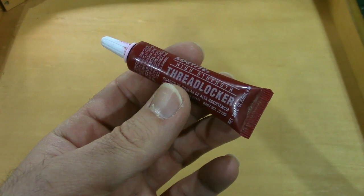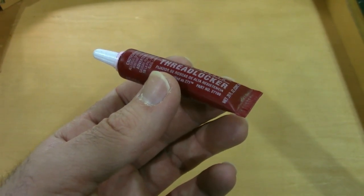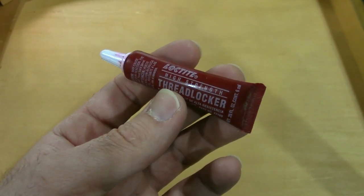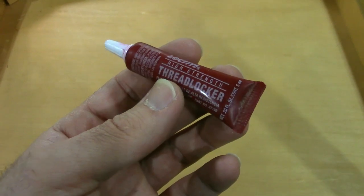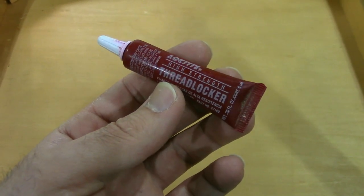Loctite makes two kinds. This is the high-strength red color. They also make a blue, and that's for removable, smaller screws. And this is for larger nuts and bolts.